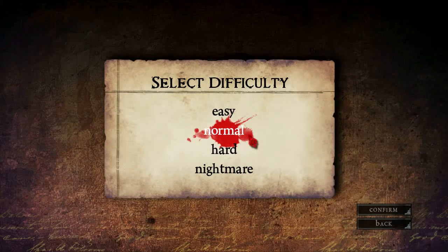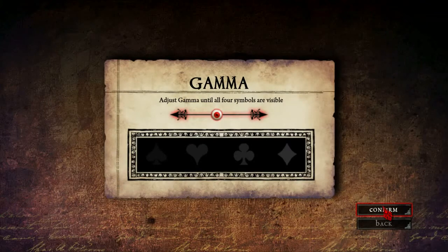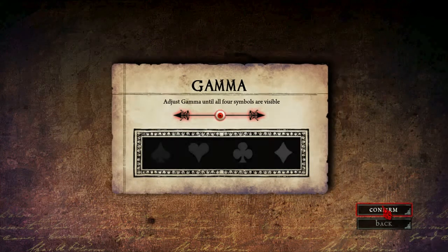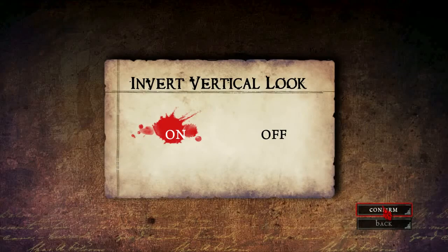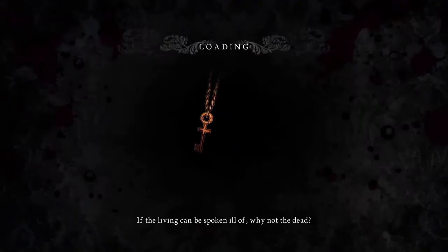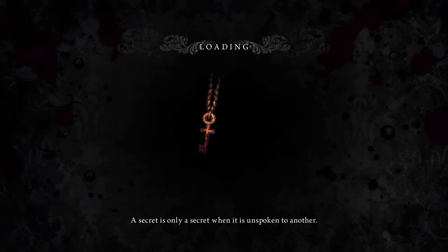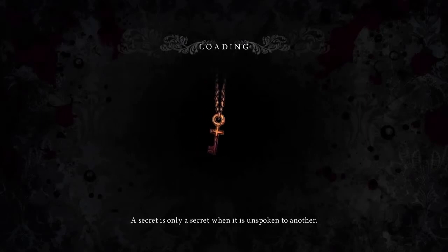We'll go ahead and play on normal mode. My gamma is pretty much already set — maybe turn it up a little bit, but not too much since it's supposed to be a dark game. I always play with vertical look inverted because doing it the other way doesn't make any sense to me. I'm from the old school of arcades and I don't know when the other mode became 'normal,' because it's never been normal for me.